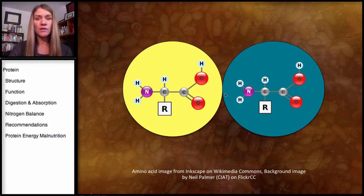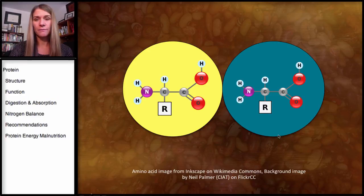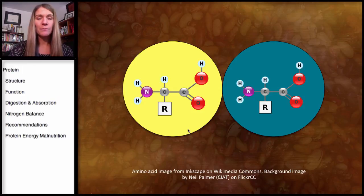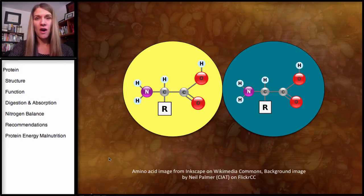And what I'm showing here as far as the structure is just simply that this circle here, when we get into digestion and absorption, I'm going to be representing one amino acid just as a simple circle. And that's the end of our section on the structure of protein.